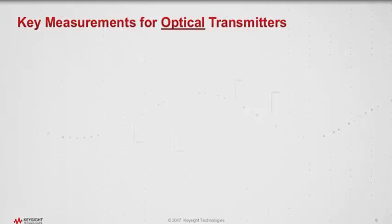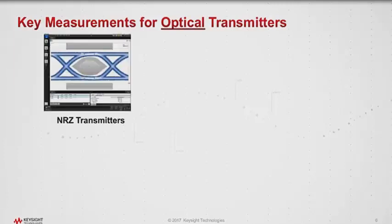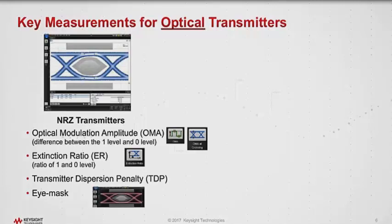We'll start with looking at some of the key measurements for optical transmitters, looking back at NRZ or non-return to zero transmitters and some measurements used to characterize those outputs. One of them is optical modulation amplitude or OMA — that's the difference between the one power level and the zero level. Extinction ratio is the ratio of the one and zero level, so it takes into account the DC offset.